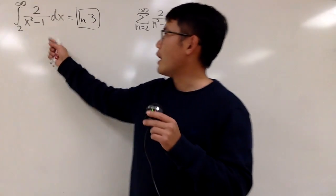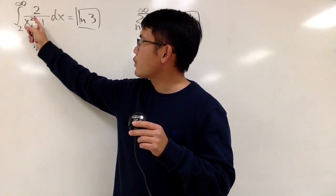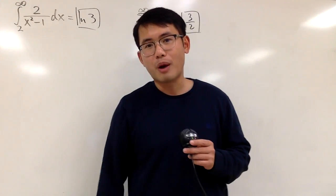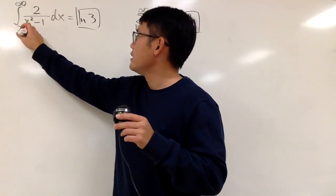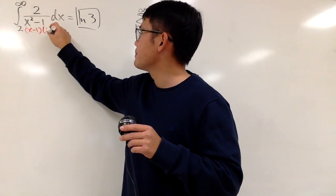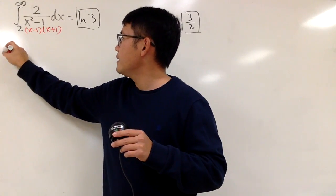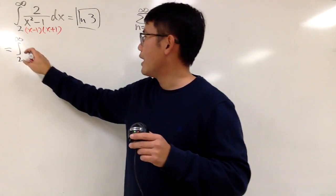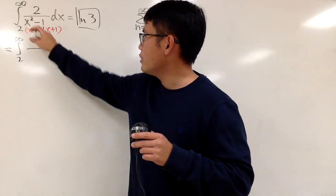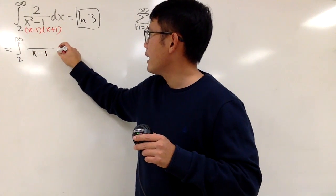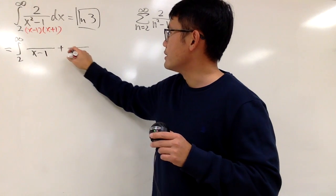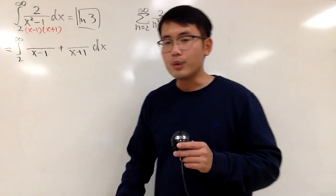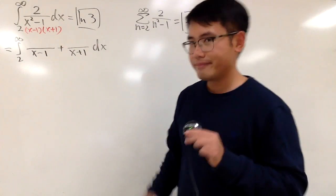For this one we notice we have x² - 1 in the denominator, so we can factor it and just do partial fractions from here. We factor this and get (x - 1)(x + 1), and this is going to be the integral from 2 to infinity. We set up one fraction over (x - 1) and add it with the other fraction with (x + 1), and then we can just do the cover-up method.